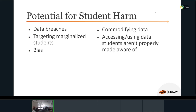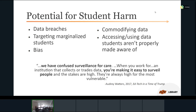Data practices are never neutral — they aren't without the potential for harm. There are numerous documented cases of students being harmed by data collection and use: data breaches, using data against marginalized populations, bias in algorithms, bias in decision-making based on data, companies profiting off student data, and even use of student data without knowledge or consent — all while institutions are fully in compliance with laws. As Audrey Watters says, we've confused surveillance for care. When you work for an institution that collects or trades data, you're making it easy to surveil people, and the stakes are always highest for the most vulnerable.